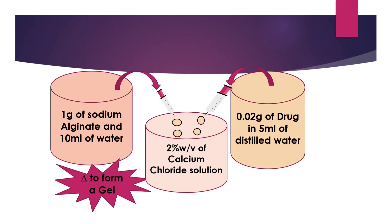This is the schematic diagram of the preparation of sodium alginate beads. In one beaker, take 1 gram of sodium alginate and dissolve in 10 ml of water — heat and stir continuously until it forms a gel. In another beaker, take 0.02 grams of diclofenac sodium in 5 ml of distilled water. Then mix both the drug and polymer solutions and add this dropwise into the 2% W/V calcium chloride solution. The beads will form; a dye such as amaranth can be added so the beads are visible. Thank you.